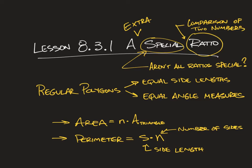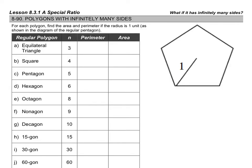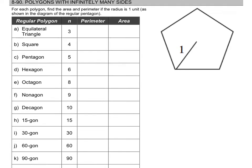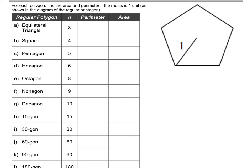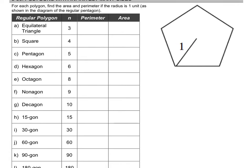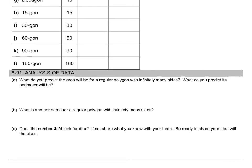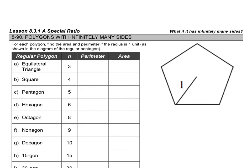Let's jump into the notes. It's a pretty quick page — we have a table in question 8-90 titled 'Polygons with Infinitely Many Sides.' We're going to look at different regular polygons with different values for side length, then calculate perimeter and area. In question 8-91 we'll analyze what we did. The essential question is: what happens to a regular polygon as it has infinitely many sides — as n goes towards infinity?